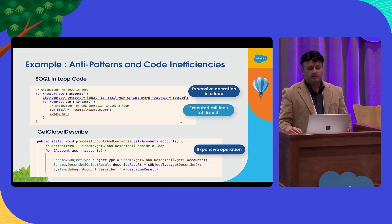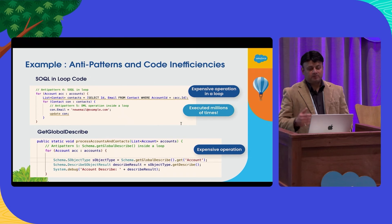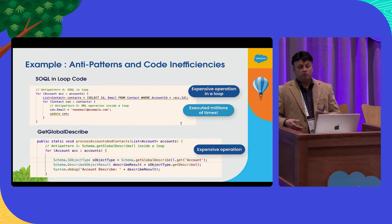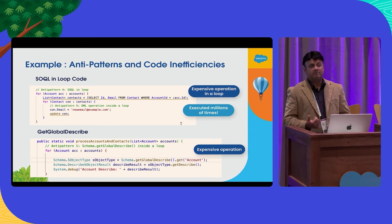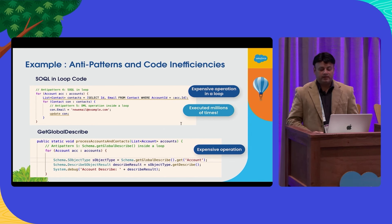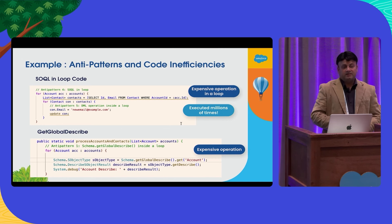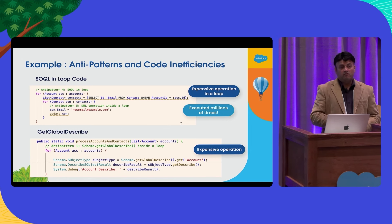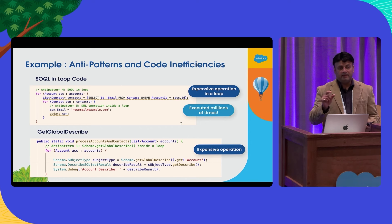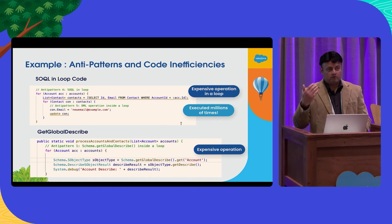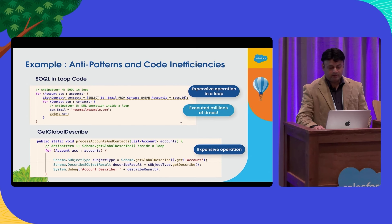A classic example is a SOQL in a loop — a very expensive operation because you're making calls to the database. If you put that in a loop, or sometimes in a nested loop, it gets executed hundreds of thousands of times, taking a big hit on performance and DB CPU. Another critical anti-pattern is 'get global describe' — again, a very memory-intensive operation. Oftentimes you don't need to call get global describe; you can make a smaller call to S-objects to just get the objects you're interested in. But we've often seen developers use it many times in a particular class.